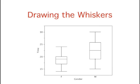The upper adjacent value for women is 24. You can see that the whisker extends from the 75th percentile of 20 to the upper adjacent value of 24. Similarly, a second whisker is drawn from the 25th percentile of 17 to the lower adjacent value of 14.